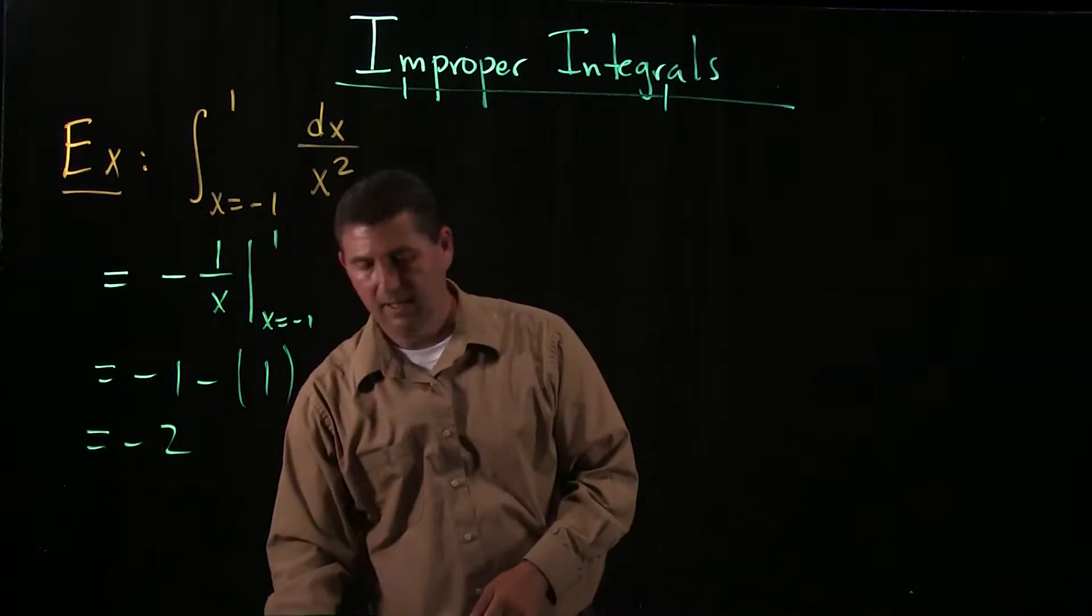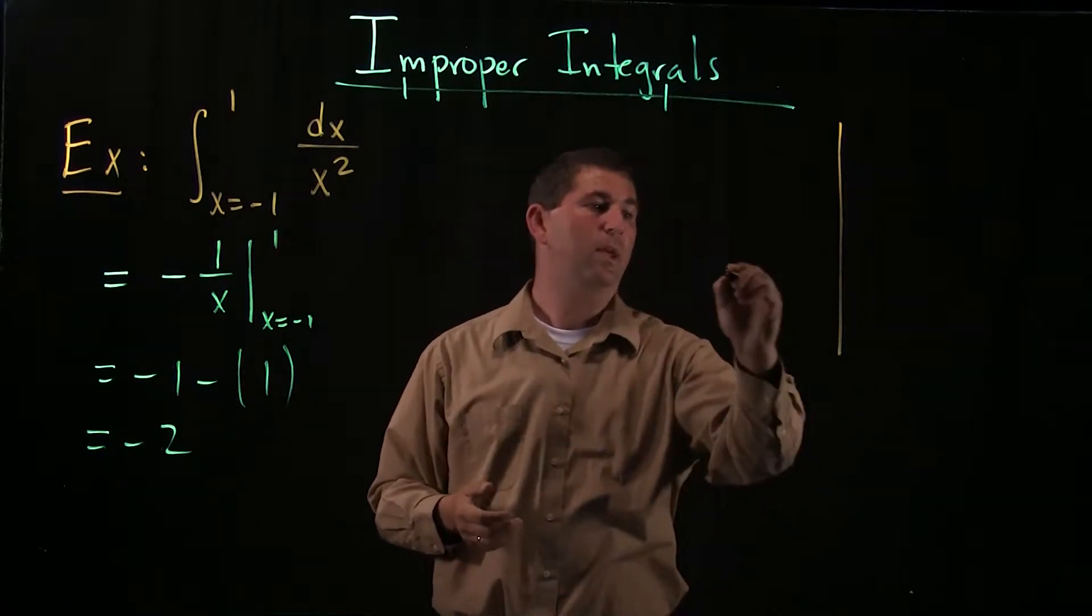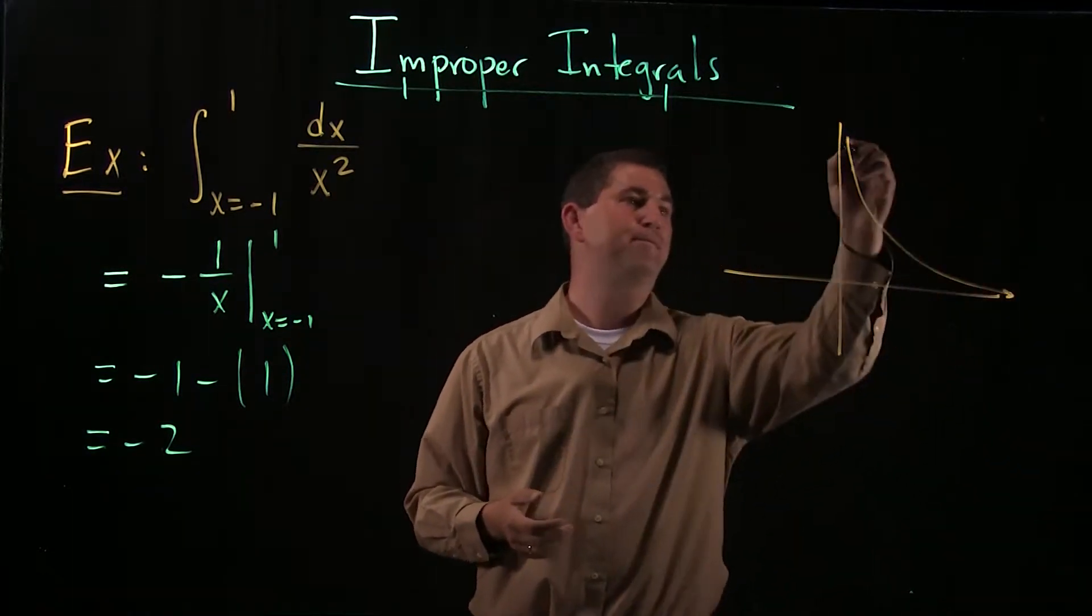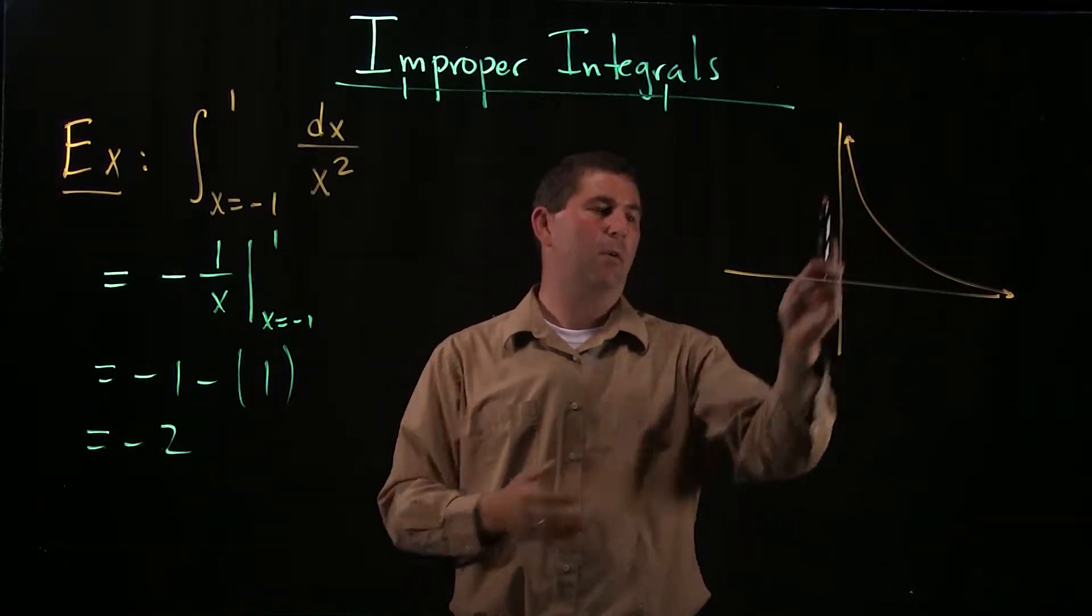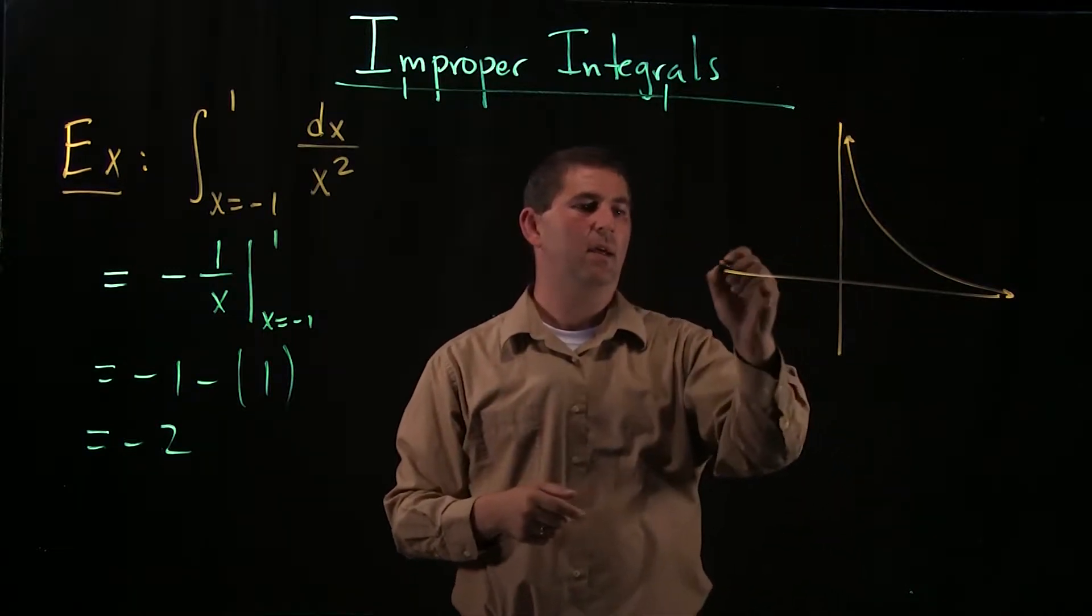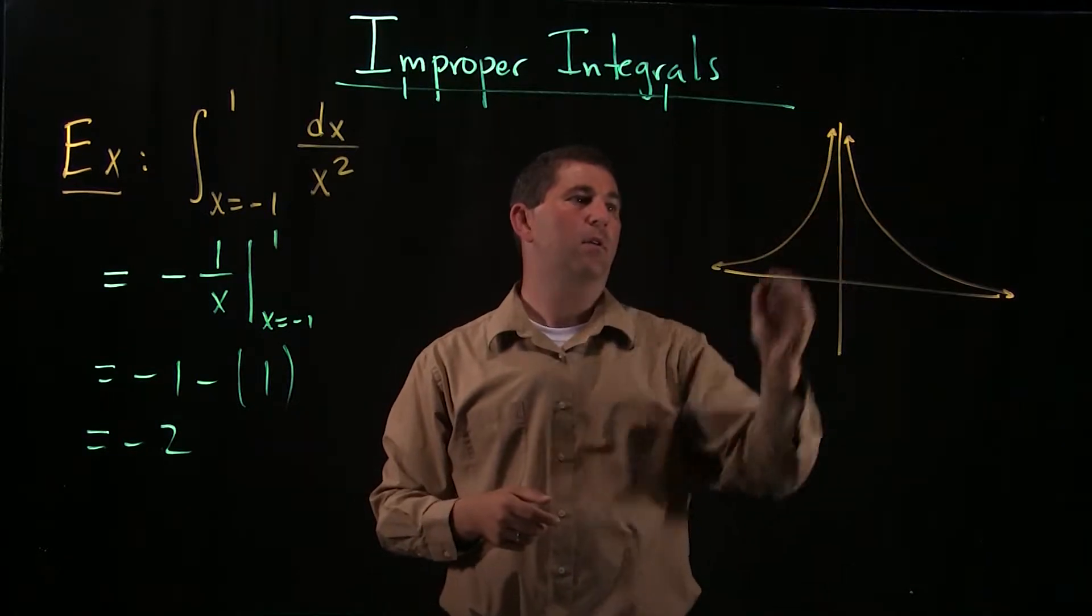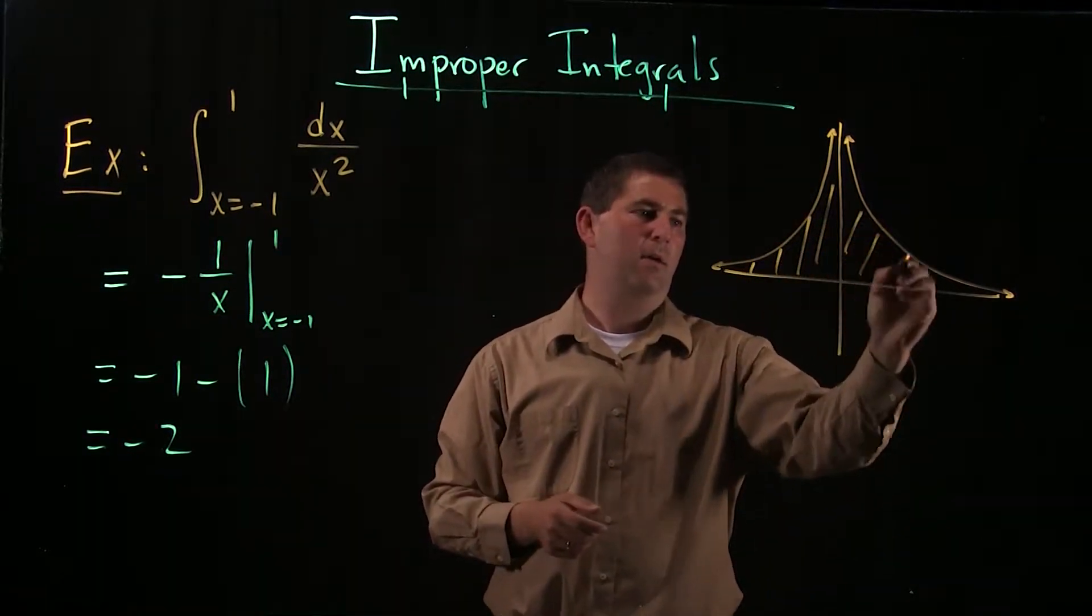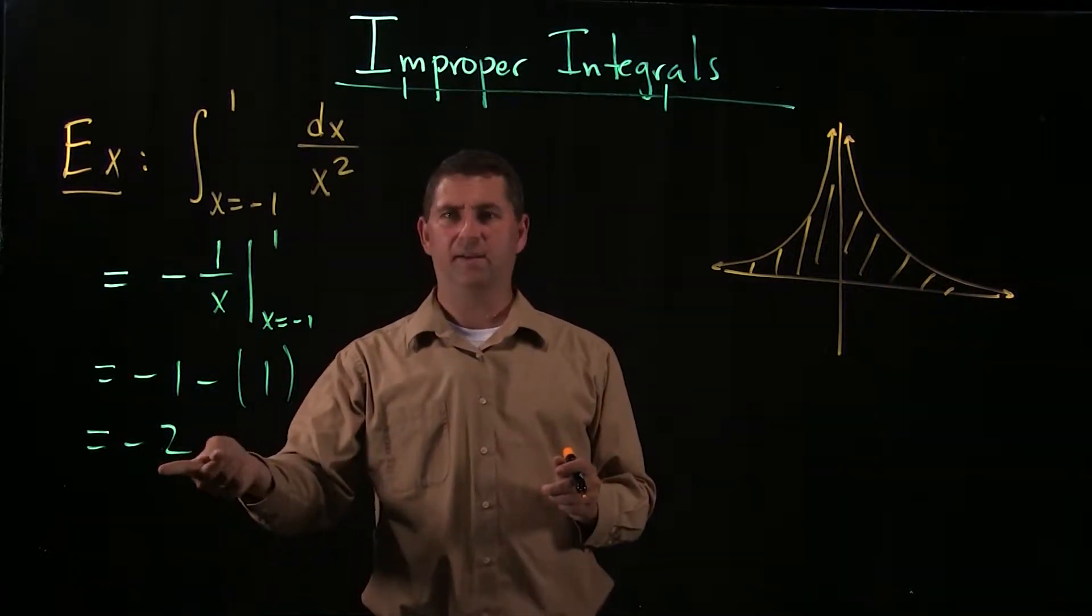If we draw a picture of 1 over x squared, we can see what may have gone wrong. On the left hand side of this arrow, or rather the right hand side, we see that the function is going up to infinity. Of course the other side is symmetric, it's also going up to infinity. The area here really should be positive, but it's not, it's negative 2.